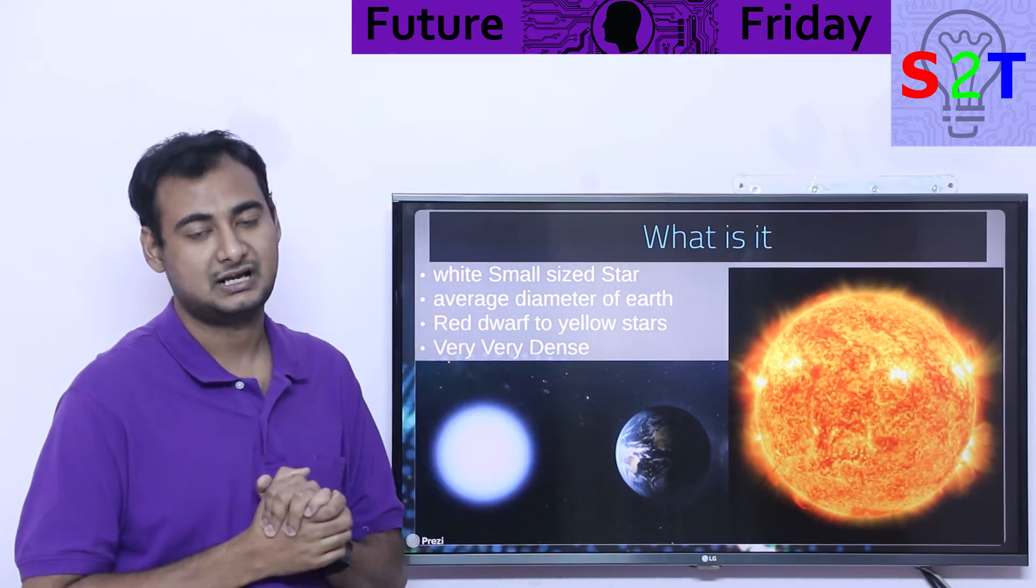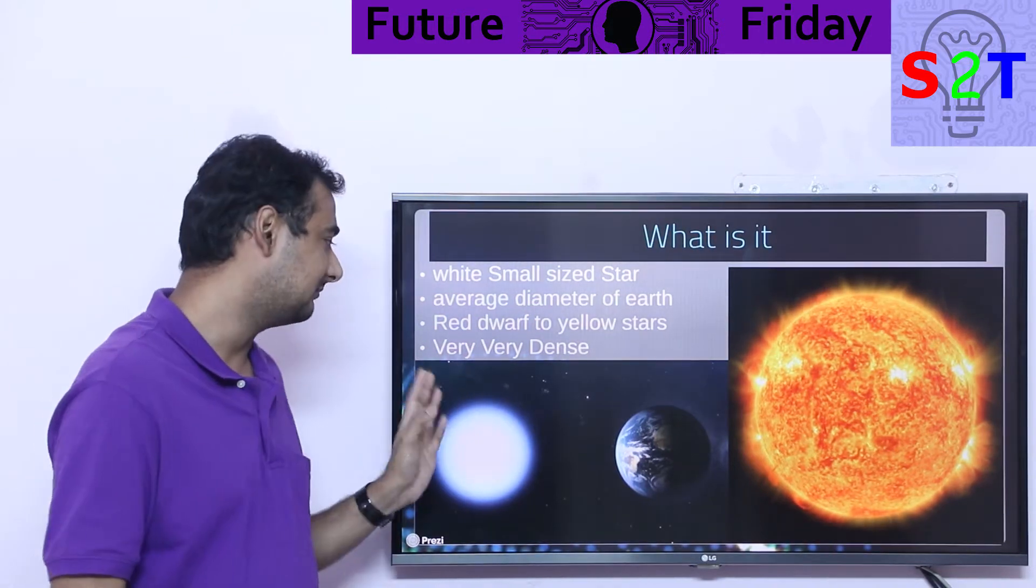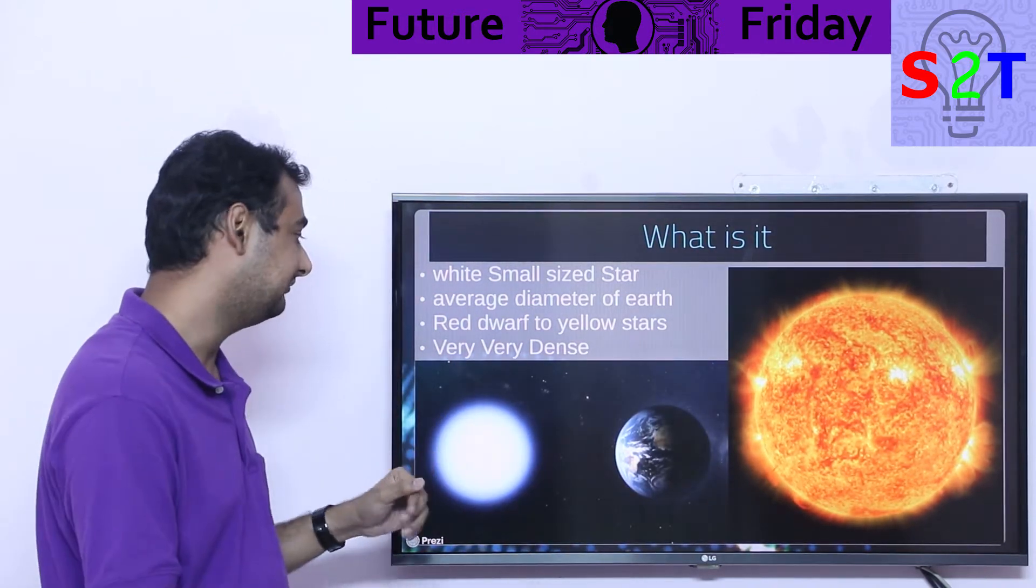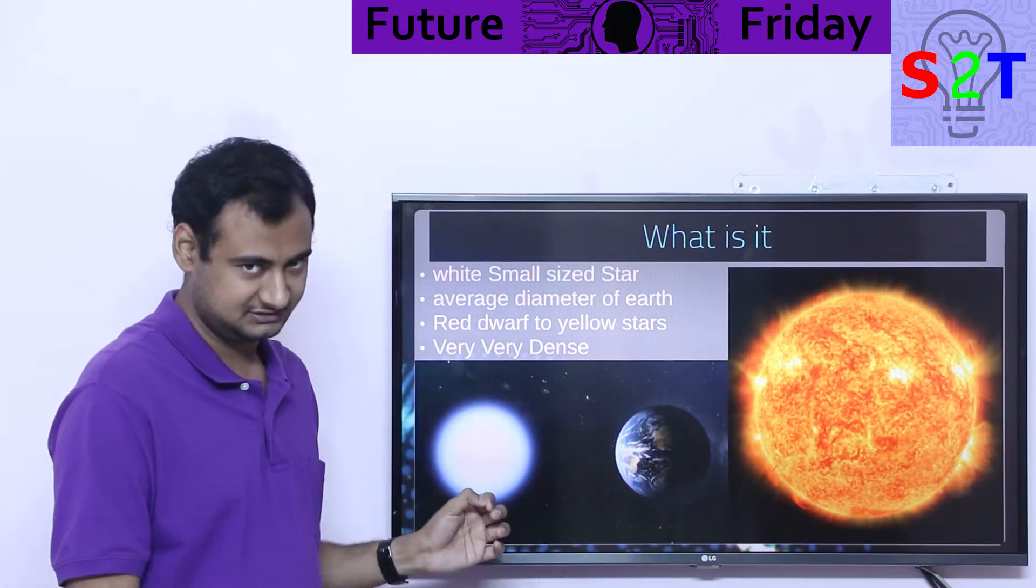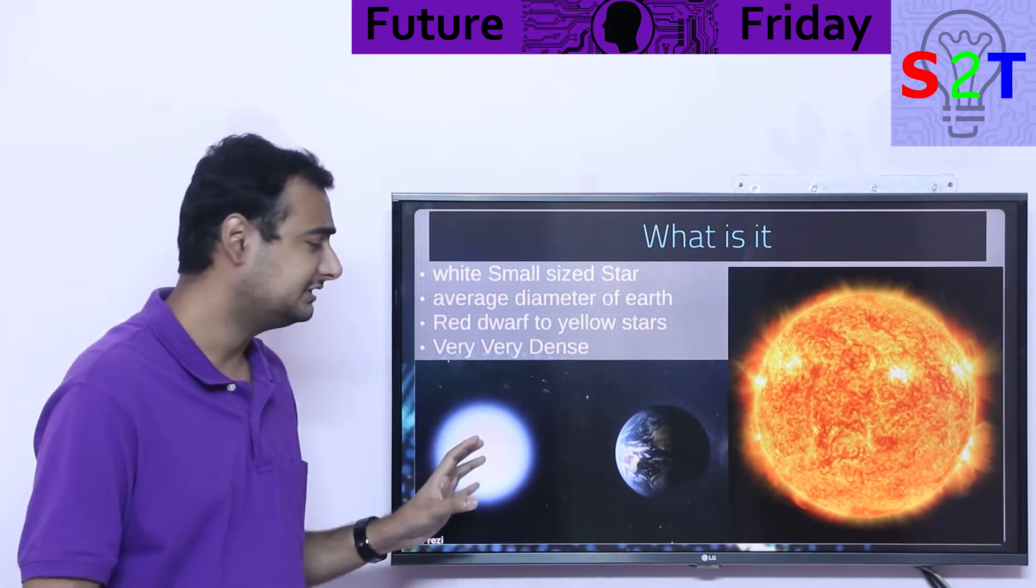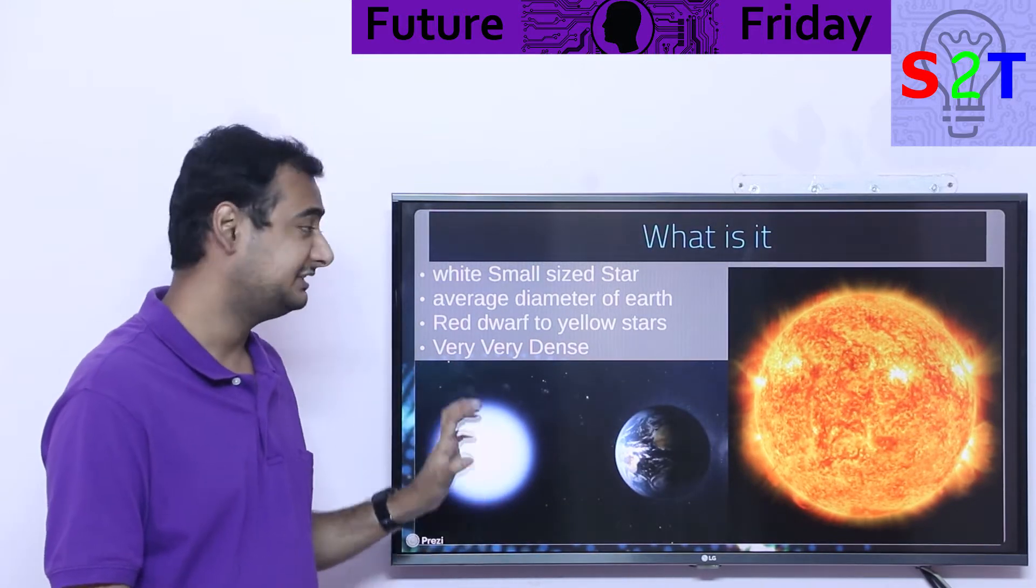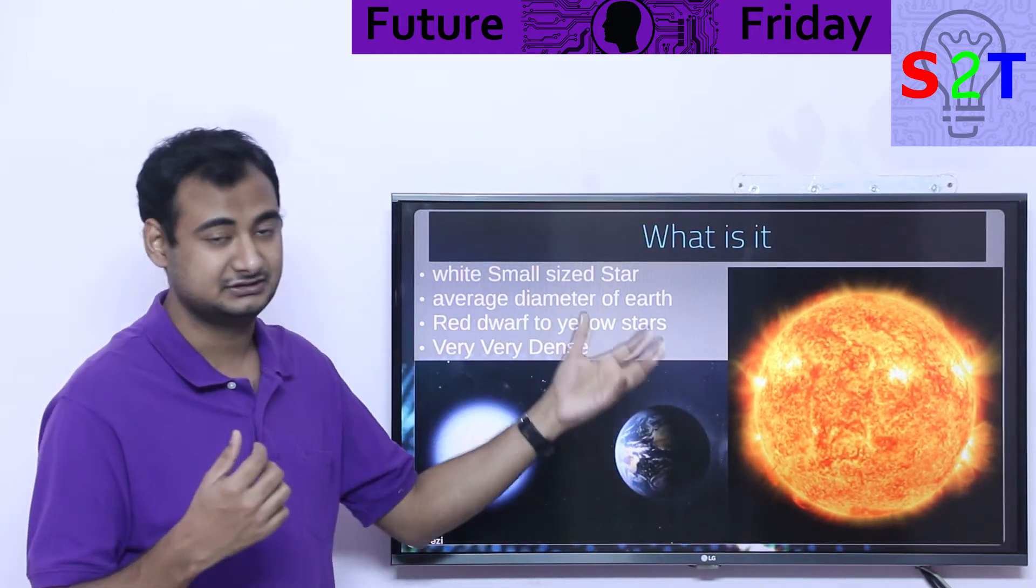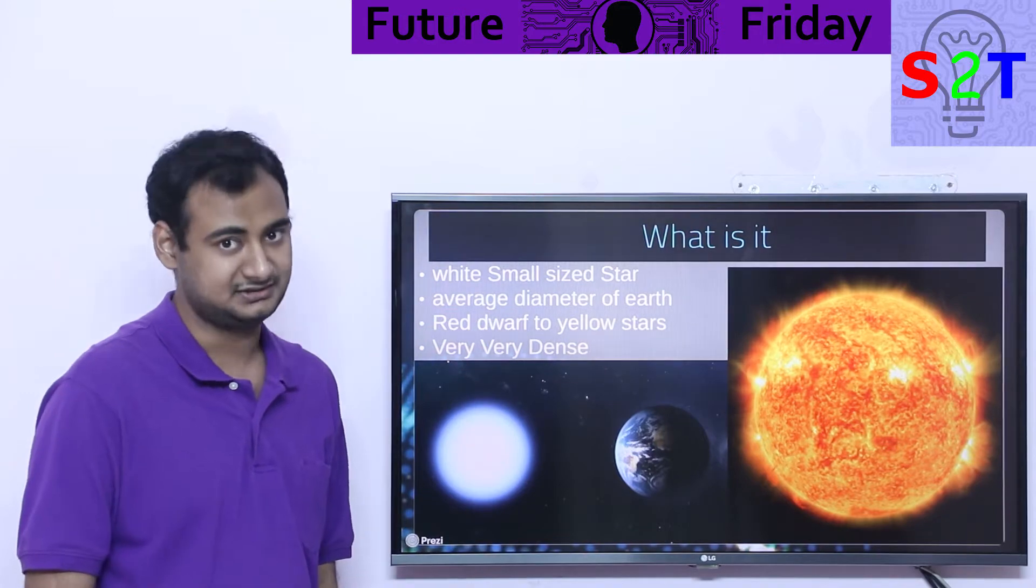This white dwarf happens only to red dwarfs and yellow stars. So the majority of star systems in the Milky Way will turn into white dwarfs at the end of their life. This is ludicrously dense. It's hard to observe the star itself because it's not that bright. However, its gravitational lensing and its effect on nearby stars are surprisingly easy to detect.